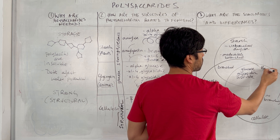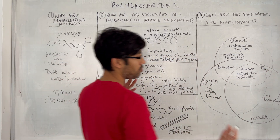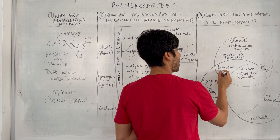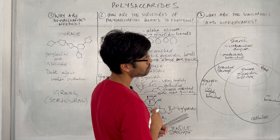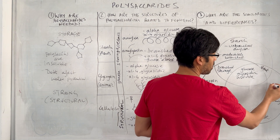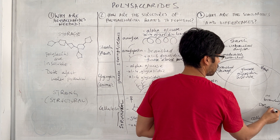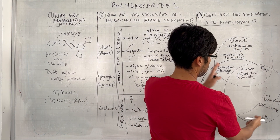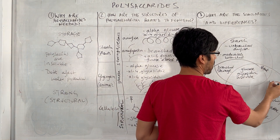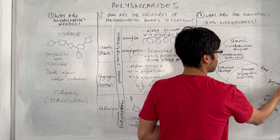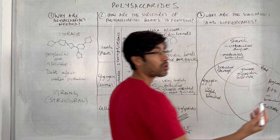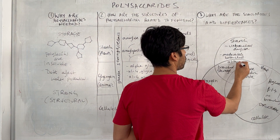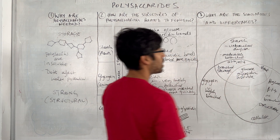Cellulose and starch both belong to plants, but functionally they are very different. Starch and glycogen share a storage function, while cellulose's unique function is structural. Cellulose is the only one made of beta glucose and has beta one-to-four glycosidic bonds. Starch and glycogen both share alpha one-to-four and alpha one-to-six glycosidic bonds.